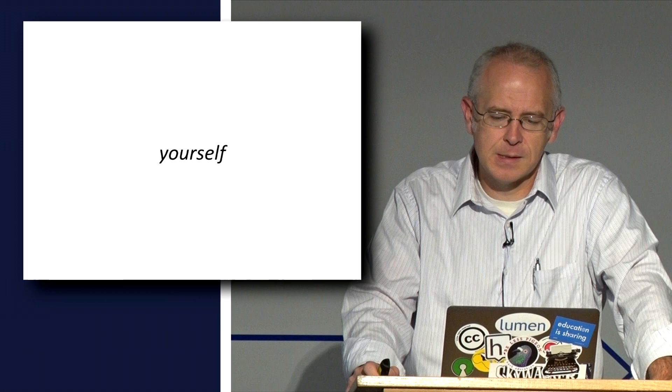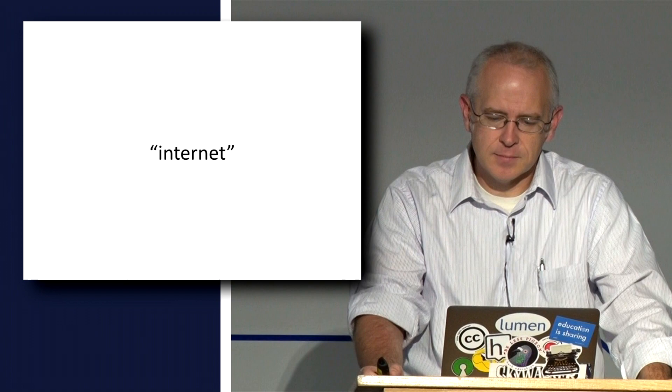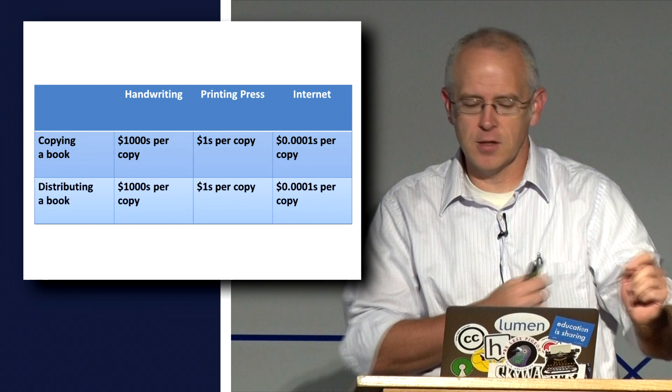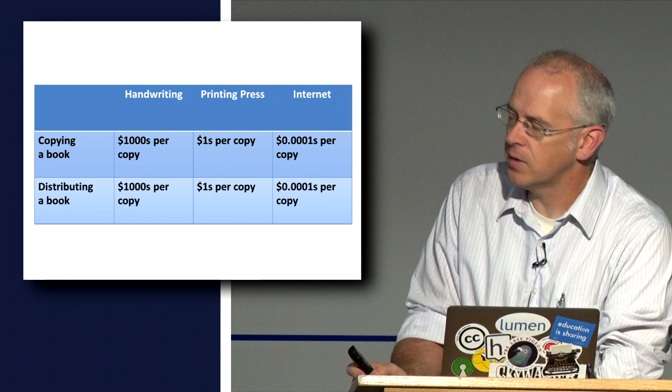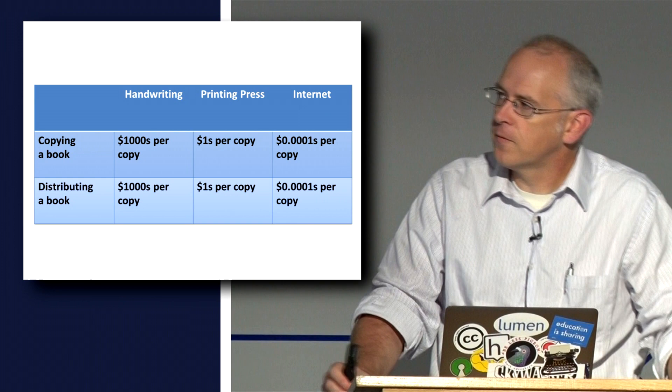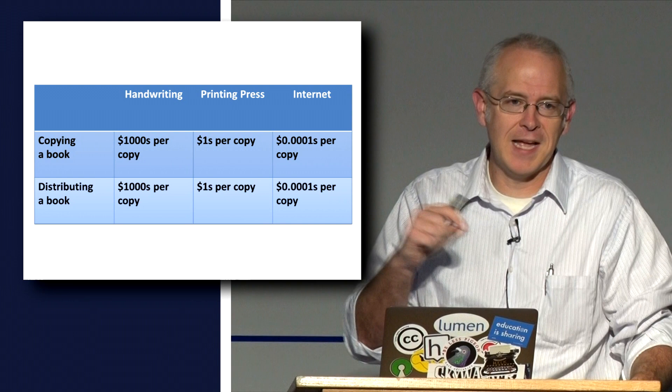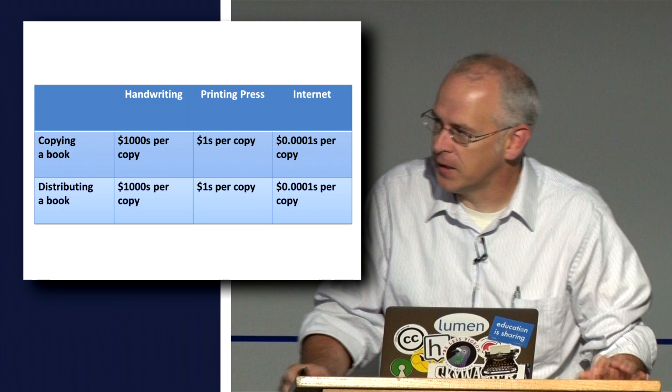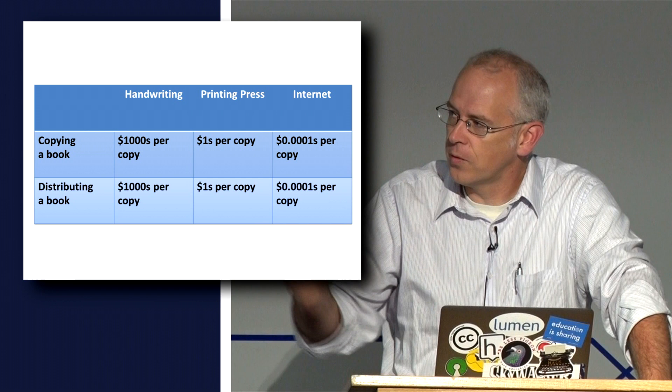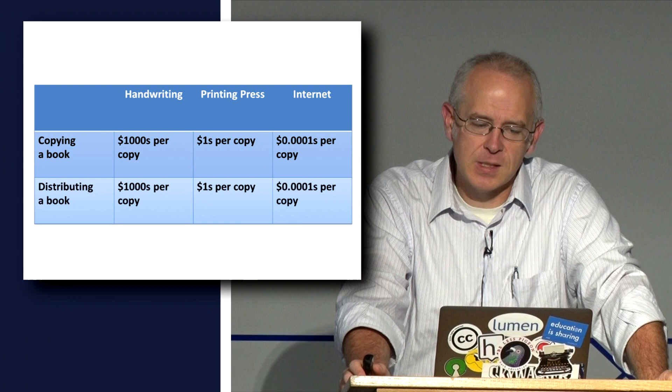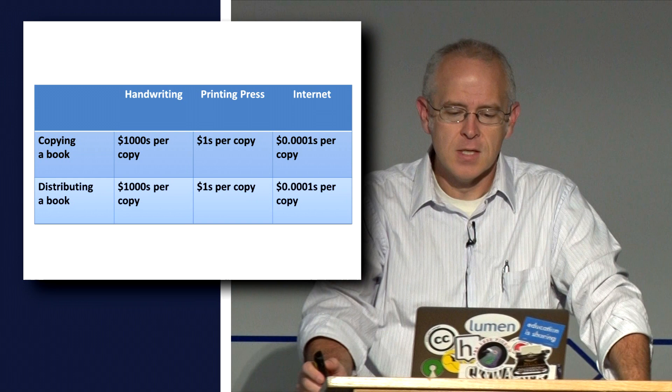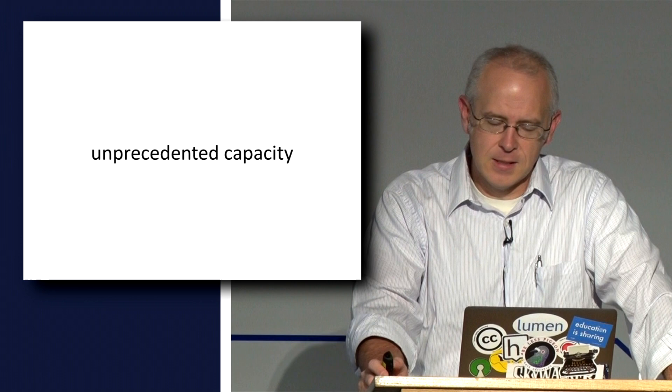The internet has been called a sharing machine. The march of technology has made our capability to share information with each other cheaper and easier in terms of copying and distributing. From thousands of dollars to produce a handwritten copy and move it around the world, to where we find ourselves today where it's essentially free to make perfect copies and distribute them at the speed of light around the world. That gives us an unprecedented technical capacity for sharing.